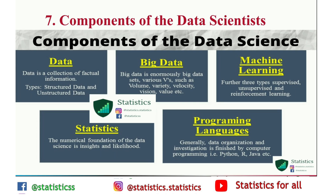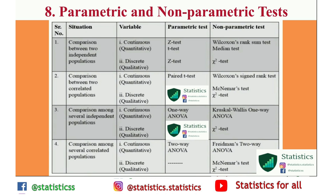The seventh topic is the components of data science. There are basically five components: data, big data, machine learning, statistics, and programming language. Statistics and programming language are the backbone of any data scientist — without these two subjects you cannot be a data scientist. The eighth topic is parametric and non-parametric tests, which will be covered in detail with suitable examples in our upcoming videos.